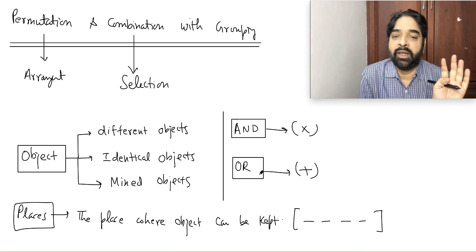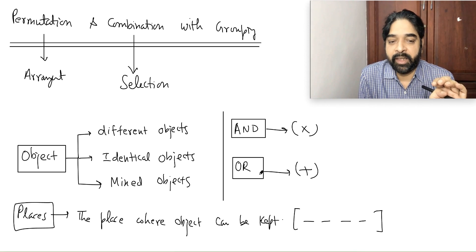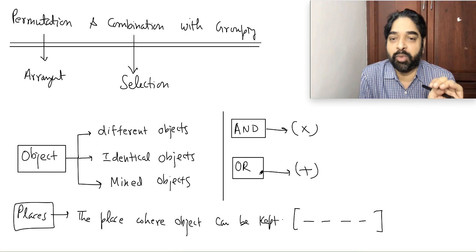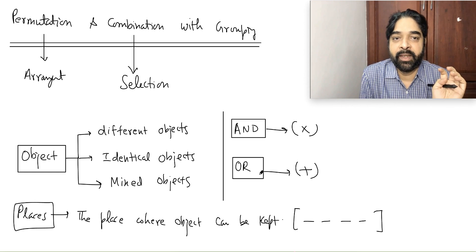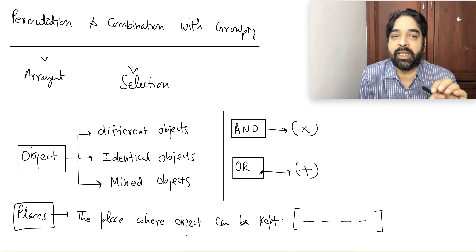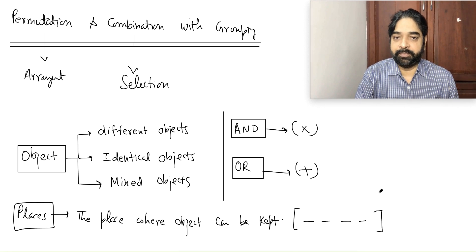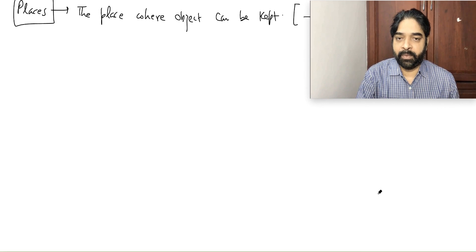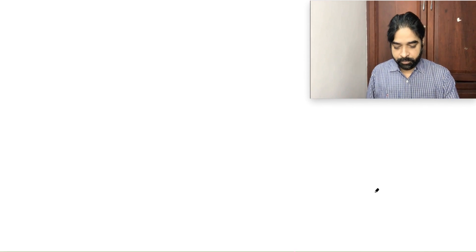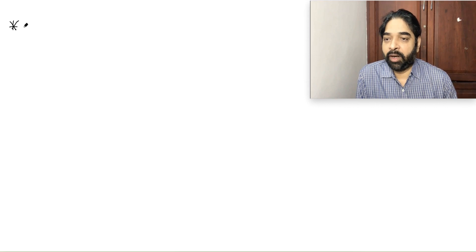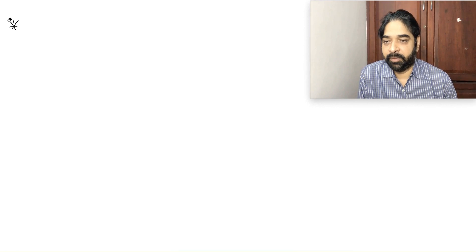This is a very easy chapter if you understand the logic. In fact, if anyone asks me my favorite topics in mathematics, these two — P&C and probability — are what I always prefer. These are real mathematics where you see mathematics truly applied. Now let's start by learning how to use AND and OR.